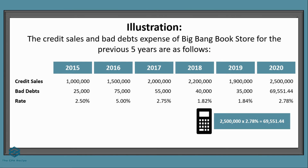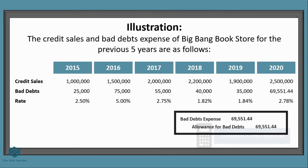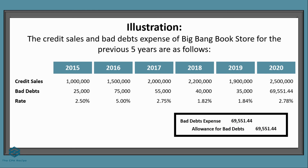You might wonder if a decimal answer is correct — yes, a correct answer doesn't always have to be a whole number. To record the entry: debit bad debts expense 69,551.44; credit allowance for bad debts 69,551.44.